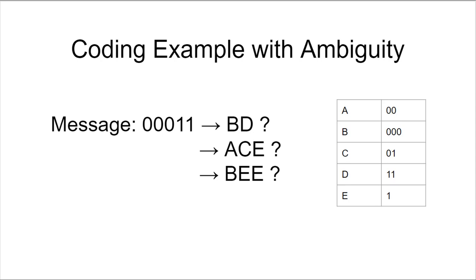When we build codes, we don't want the codes to be prefixes of one another because it creates ambiguity at the receiving end.